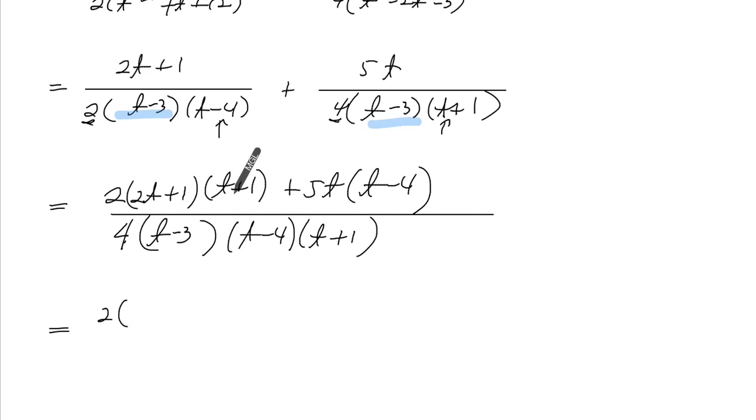Okay, so this is going to be 2t squared, 1, 2, so 3t plus 1, 5t squared minus 20t.